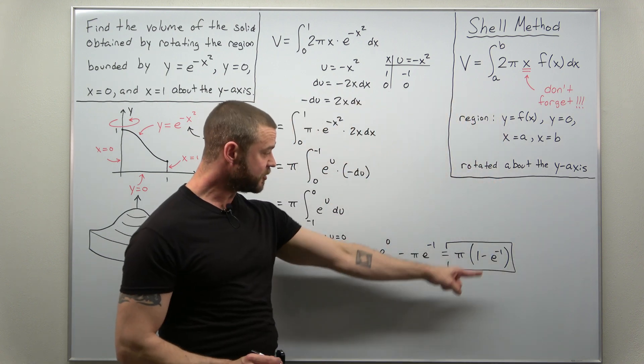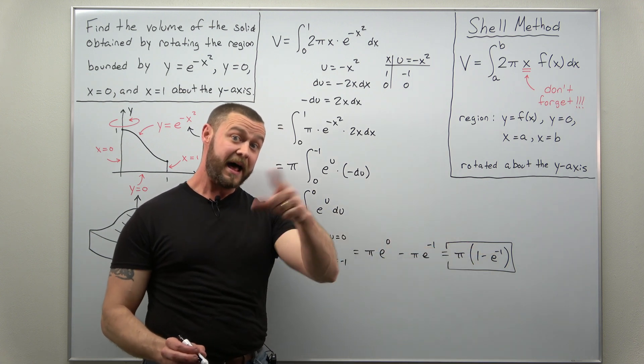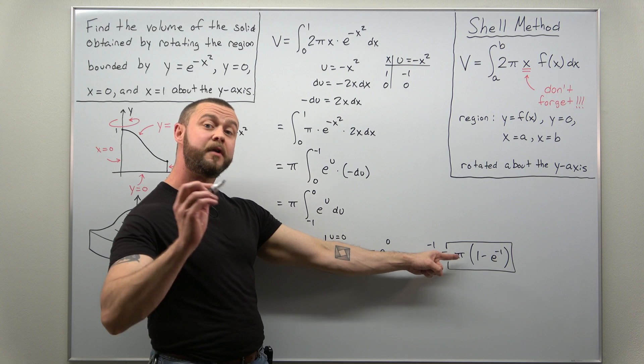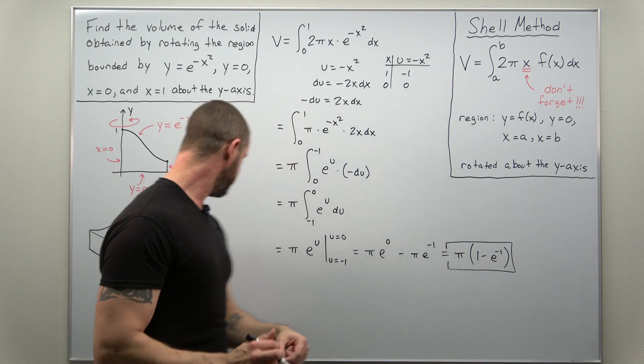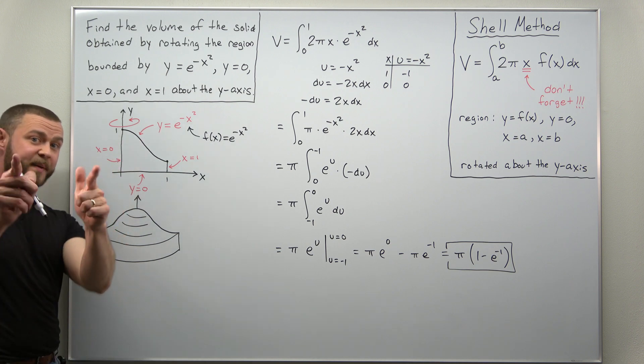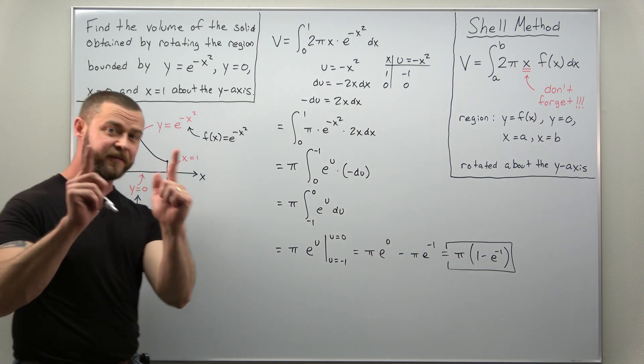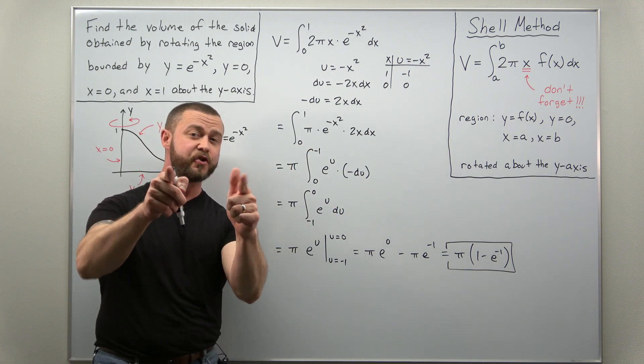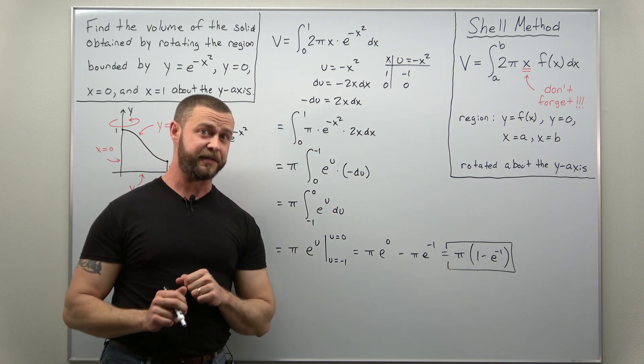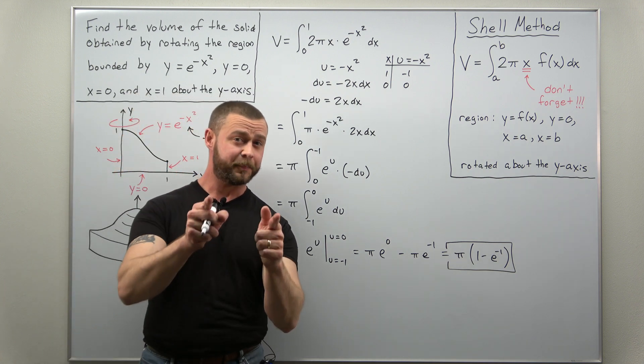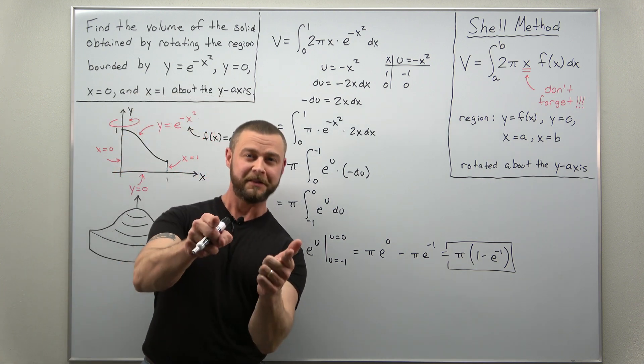And if you want to be really fancy, you can rewrite e to the negative 1 as 1 over e. But that does it. This number here, this is the volume of this solid where we took a region and then rotated about the y-axis. Remember, functions of x rotated about the y-axis, that's your clue to apply the shell method. Hope you enjoyed the video. If you did, support the channel. Like and subscribe.